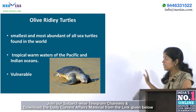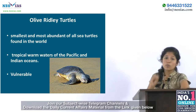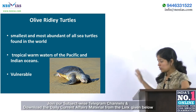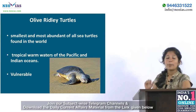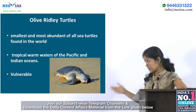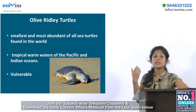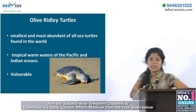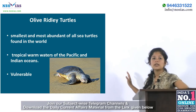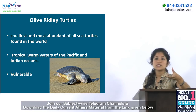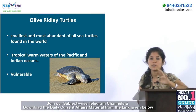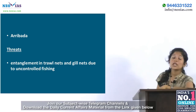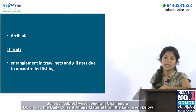Olive ridley turtles are the smallest and most abundant of all sea turtles found in the world. They are found in the tropical warm waters of the Pacific and Indian Ocean. They are classified as vulnerable under the IUCN Red List. Olive ridley turtles are best known for their unique mass nesting which is known as Arribada.